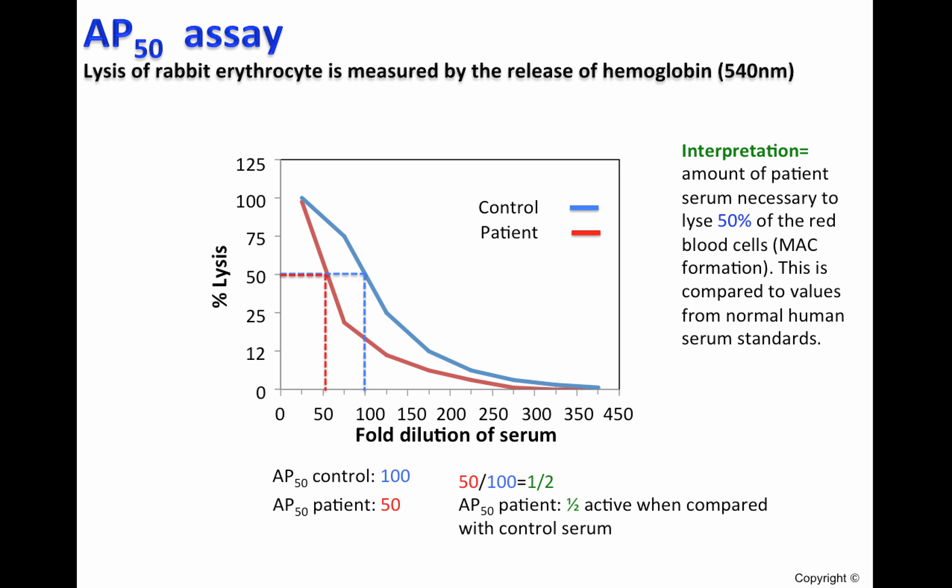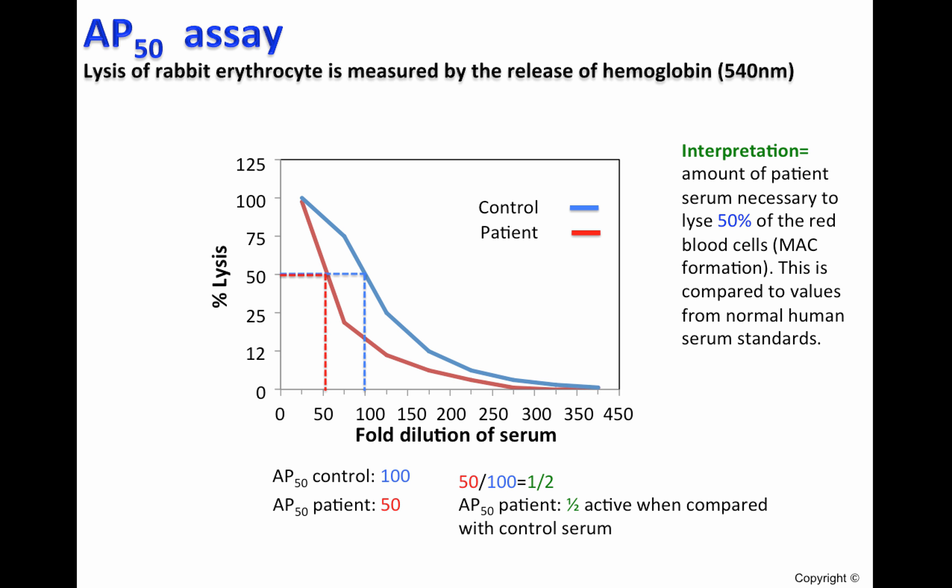In summary, the AP50 is the amount of patient serum necessary to lyse 50% of red blood cells. Both assays, AP50 and CH50, are used to assess problems with the complement system. Nevertheless, specific tests are required to define exactly which complement components are missing or not working efficiently. Thank you.